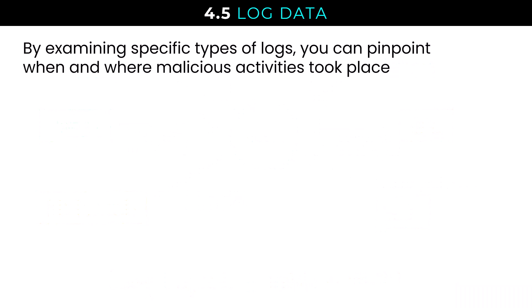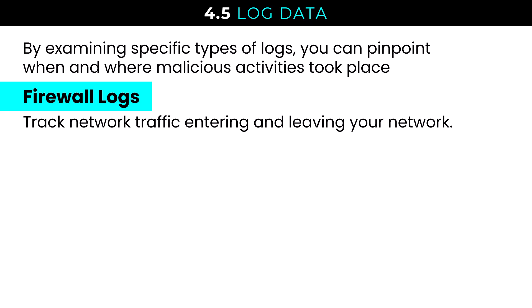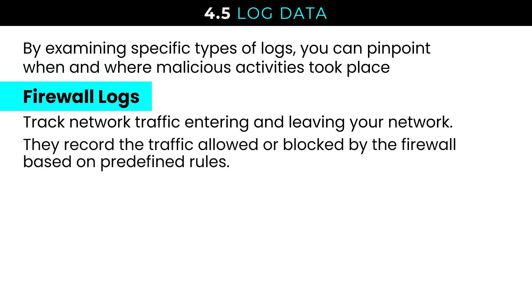From an investigation perspective, by examining specific types of logs, you can pinpoint when and where malicious activities took place. For example, with firewall logs, we can track network traffic entering and leaving our network — that's north-south traffic. With east-west traffic, we can also investigate traffic moving around within our environment. If it's passing through the firewall, it should get logged. Firewall logs record traffic allowed or blocked based on predefined rules — which is the rule-based access control implementation we see in firewalls.